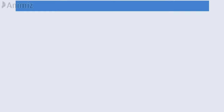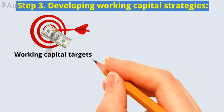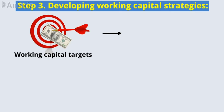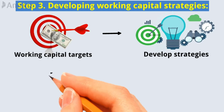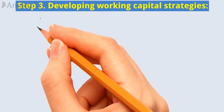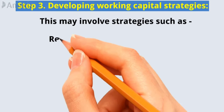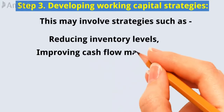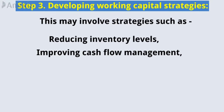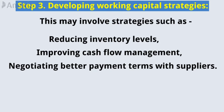Step 3: Developing working capital strategies. With working capital targets in place, the company can develop strategies to optimize its working capital. This may involve strategies such as reducing inventory levels, improving cash flow management, or negotiating better payment terms with suppliers.